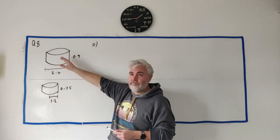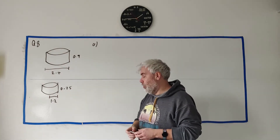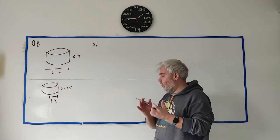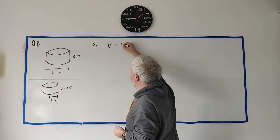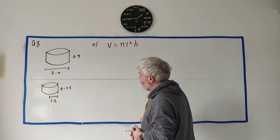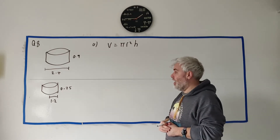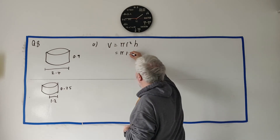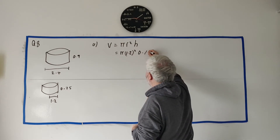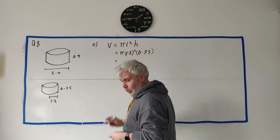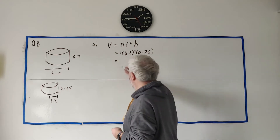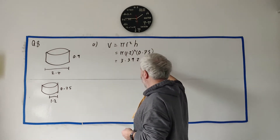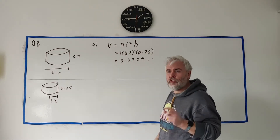A lot of students would have worked out the volume of the full pool and lost marks. We want the volume of the cylinder with height 0.75 and radius 1.2. The formula from our tables is: volume equals pi r squared h, where r is the radius and h is the height. So this equals pi times 1.2 squared times 0.75. Put all that into a calculator and we get 3.3929...